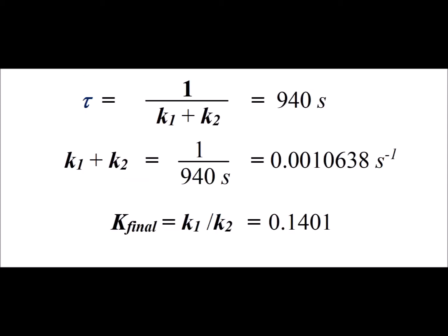Now what we want to do is take that information that we got experimentally from the curve, the relaxation time, and use it to calculate the rate constants k1 and k2. We know from a previous derivation that the relaxation time for a reaction of the form A going to Z is 1 over k1 plus k2. We saw that experimentally from the graph this is equal to 940 seconds.